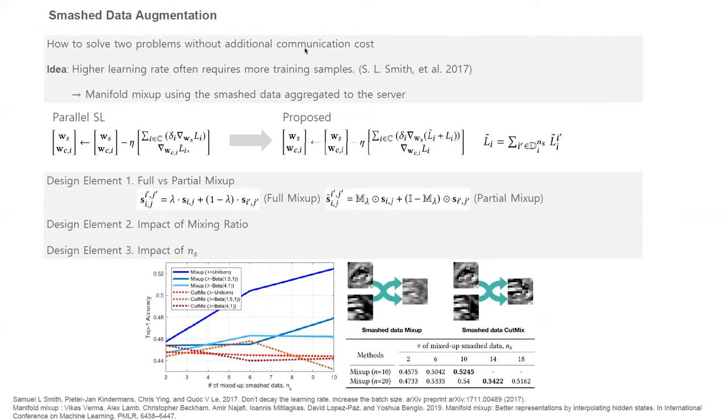The core idea of this page comes from how to improve accuracy and guarantee scalability without additional communication costs in the parallel SL learning architecture. We consider the manifold mix-up as a key to solve this problem, which enables to increase the effective batch size at the upper-model segment so as to match its higher effective learning rate.